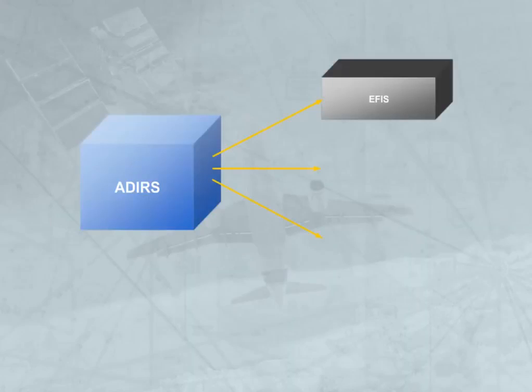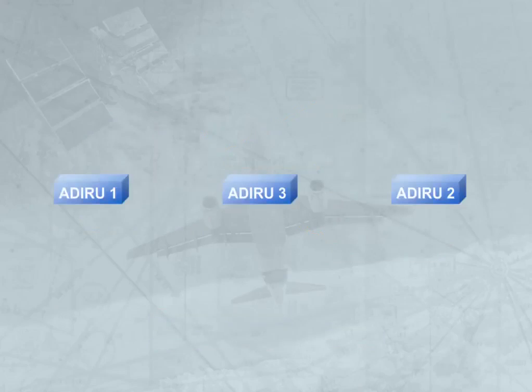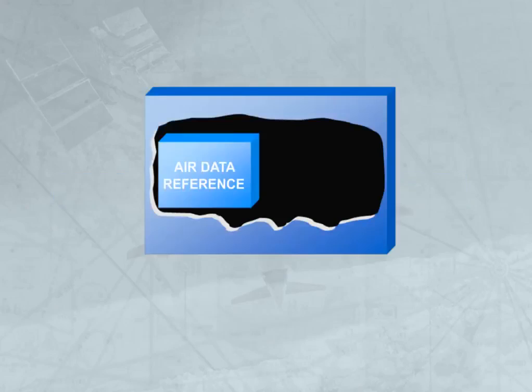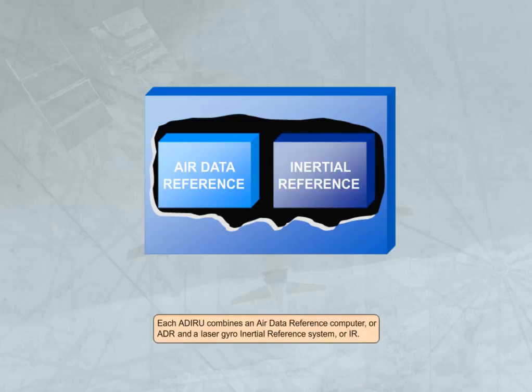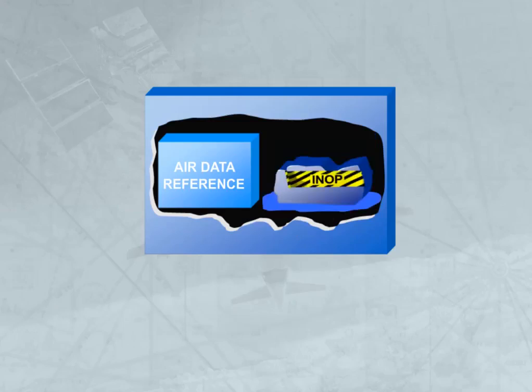The purpose of the AirData Inertial Reference System is to provide air data and inertial information to the EFIS system, the FMGC, and other users. The A320 has three separate but identical AirData Inertial Reference Units. Each ADIRU combines an AirData Reference Computer, or ADR, and a Laser Gyro Inertial Reference System, or IR. The ADR and IR systems of each ADIRU operate independently, and failure of one system will not cause failure of the other.